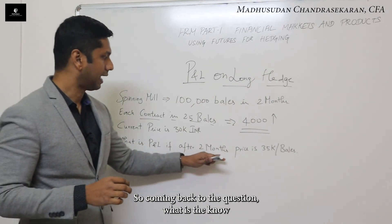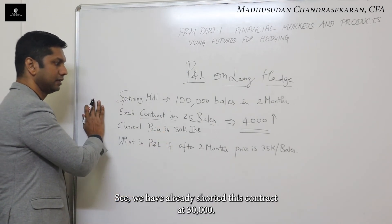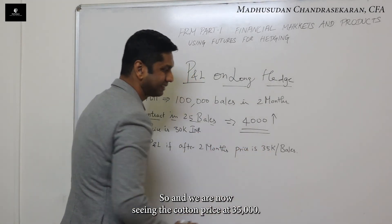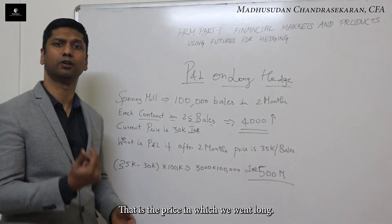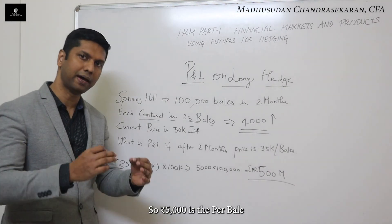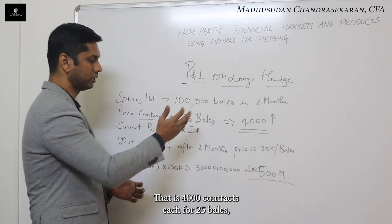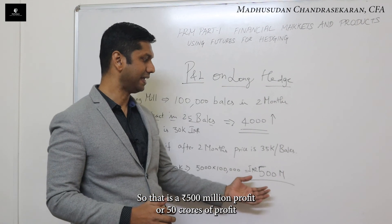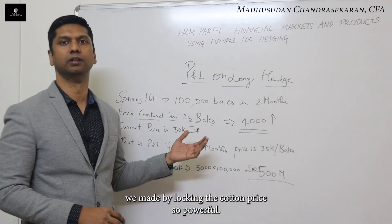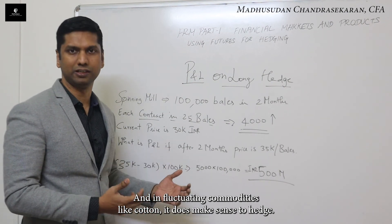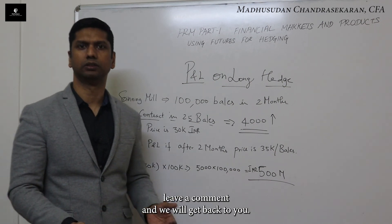Coming back to the question: what is the P&L after two months if the price goes to 35,000 rupees per bale? We already went long this contract at 30,000. With cotton now at 35,000, the per-bale profit is 5,000 rupees. We hedged for 100,000 bales — that is 4,000 contracts each for 25 bales. So 100,000 bales times 5,000 rupees equals 500 million rupees, or 50 crores of profit made by locking the cotton price. In fluctuating commodities like cotton, it does make sense to hedge. It's a very important tool for financial risk managers to be aware of. I hope you found this useful — leave a comment if you have any questions.